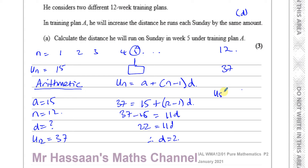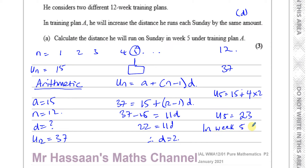So the 5th term is going to be 15 + (5 − 1) × 2, which is 15 + 8 = 23. So in week 5, under training plan A, he will run 23 kilometres. That's part A done.